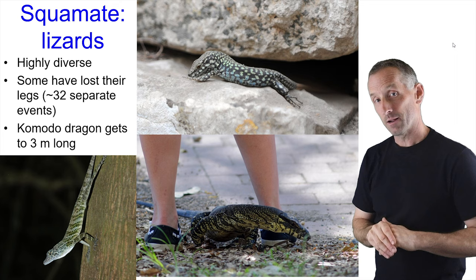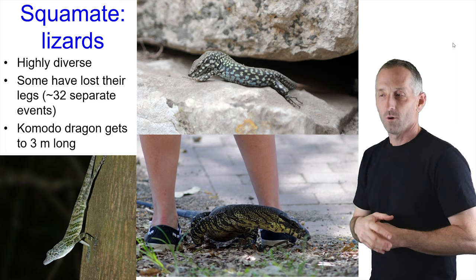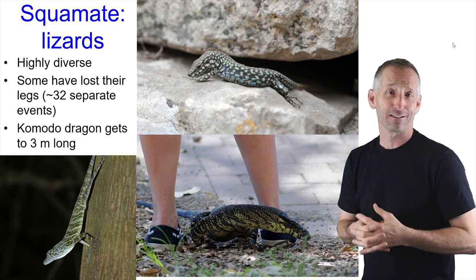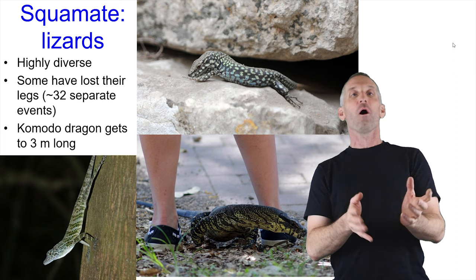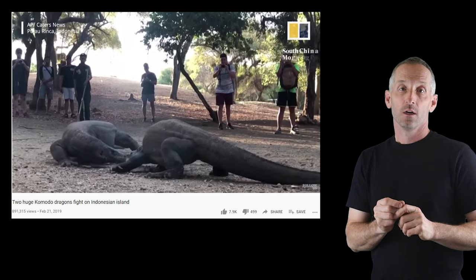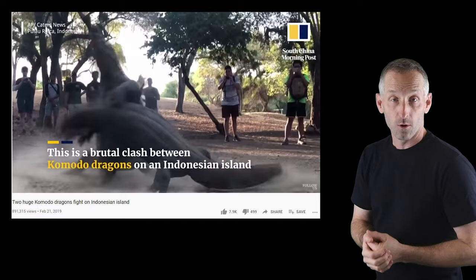My daughter spotted a lizard in Panama that I initially couldn't see, but she insisted and she was right. Lizards can go from very, very small to very large — such as Komodo dragons that get to three meters long and will kill large mammals.